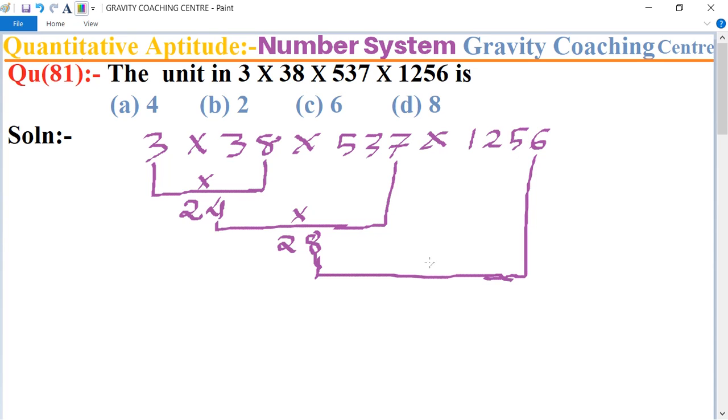units digit 6. So 8 × 6 equals 48. Therefore, 8 is the unit digit of the product, so option (d) is the correct answer.